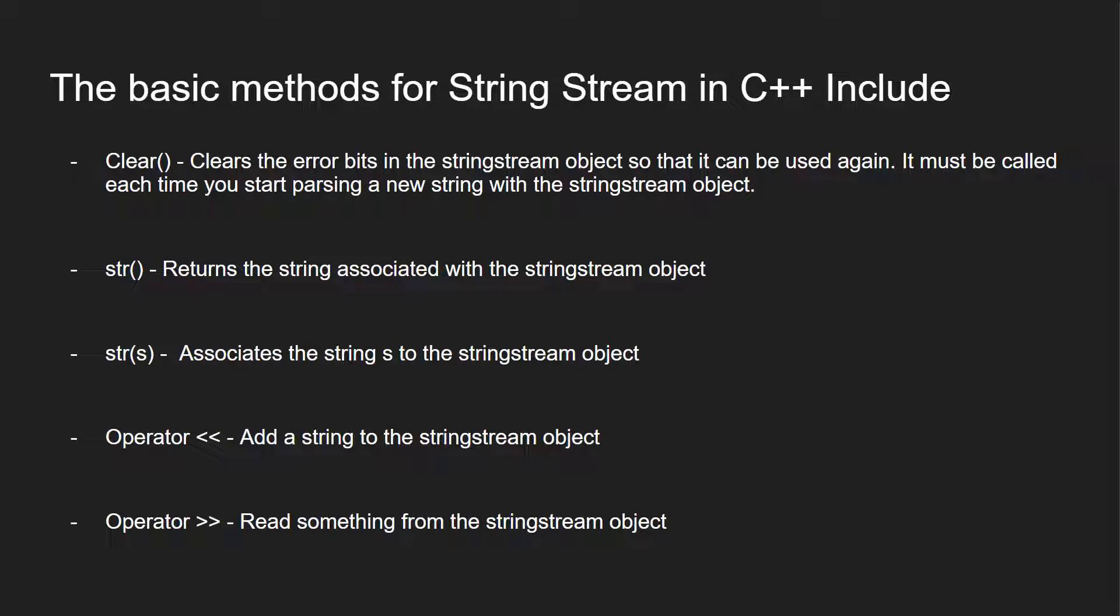So the basic methods of the string stream in the C++ language include, so these are the five different things we can use. So we have the clear function which clears the error bits in the string stream object so that it can be used again. And it needs to be called each time you start parsing a new string with the string stream object.